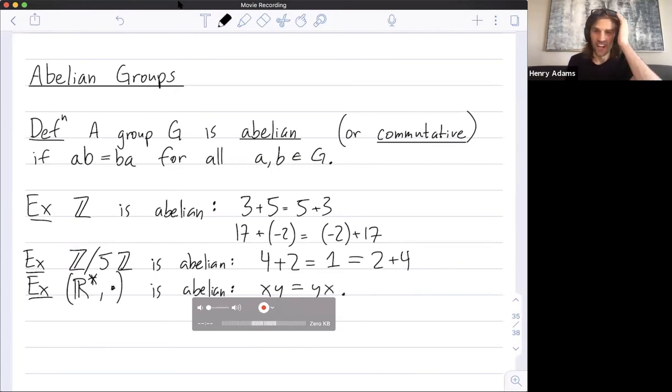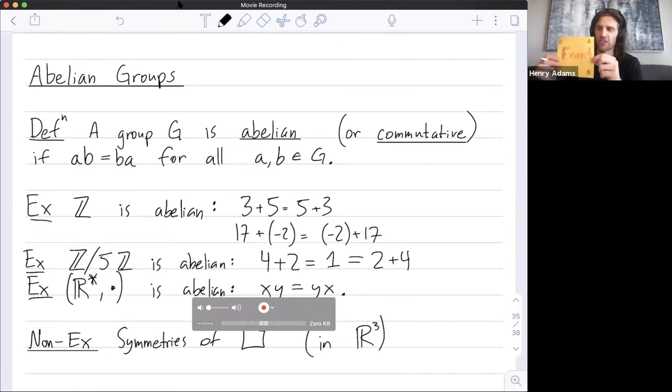What's more interesting right now is non-examples. We have not talked about so many groups together yet which are not abelian, which is something I regret a little bit. But one of them is the symmetries of the square in 3D, so think of all the rotational symmetries in 3D.